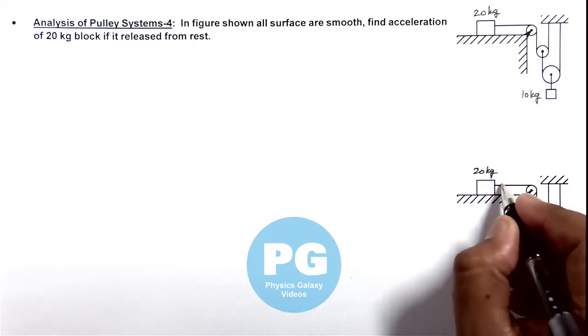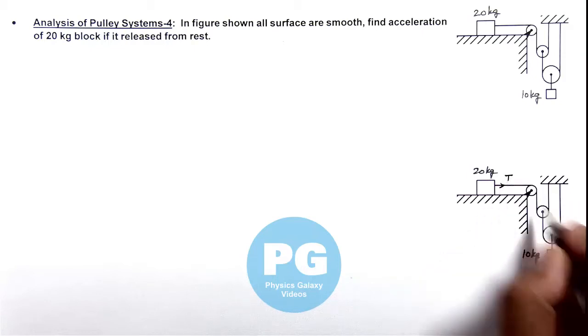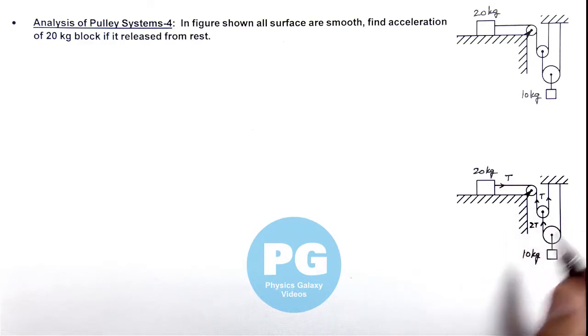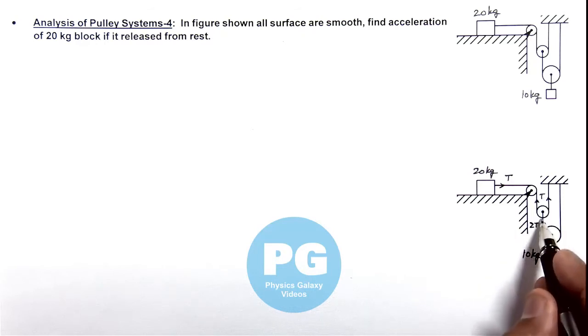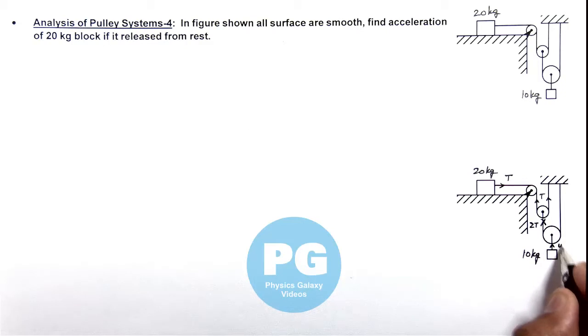If in this string tension is T, then throughout the string, as it's considered light and frictionless, tension remains the same. Here, as the pulley is light, this tension must be 2T as the forces in both sides must be zero. Similarly, here the tension can be taken as 4T.